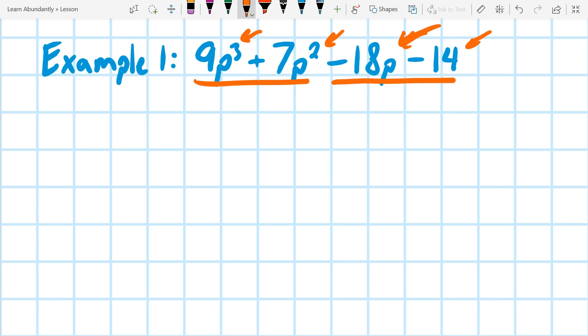What can we take out of both of these? Well, nine and seven don't have a common factor, but p can come out of both of them, and I can take a p squared out of both of them because that's the smallest exponent. That would leave me with 9p plus 7.